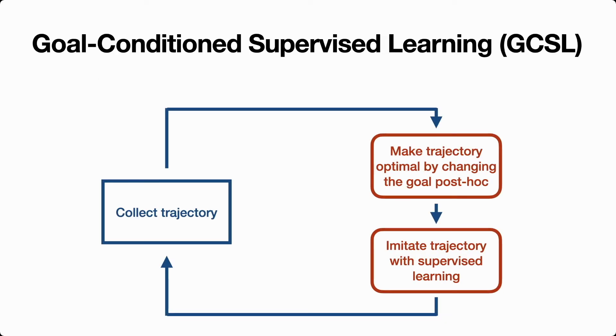This mechanism of changing the desired goal to be the goal that is actually achieved leads to our algorithm, which we call goal conditioned supervised learning, GCSL for short. GCSL follows this exact flow that we described. It iteratively collects trajectories, replaces the desired goal to turn it into an optimal demonstration, and then imitates this newly created demonstration using supervised learning, and repeats this process over and over again.